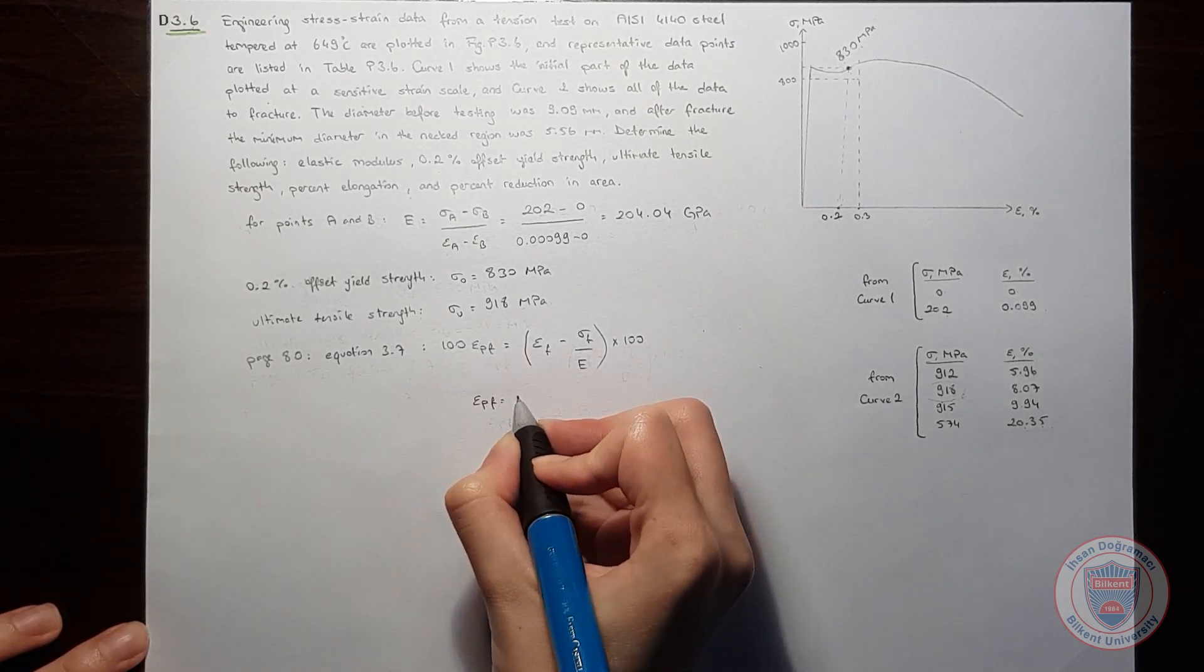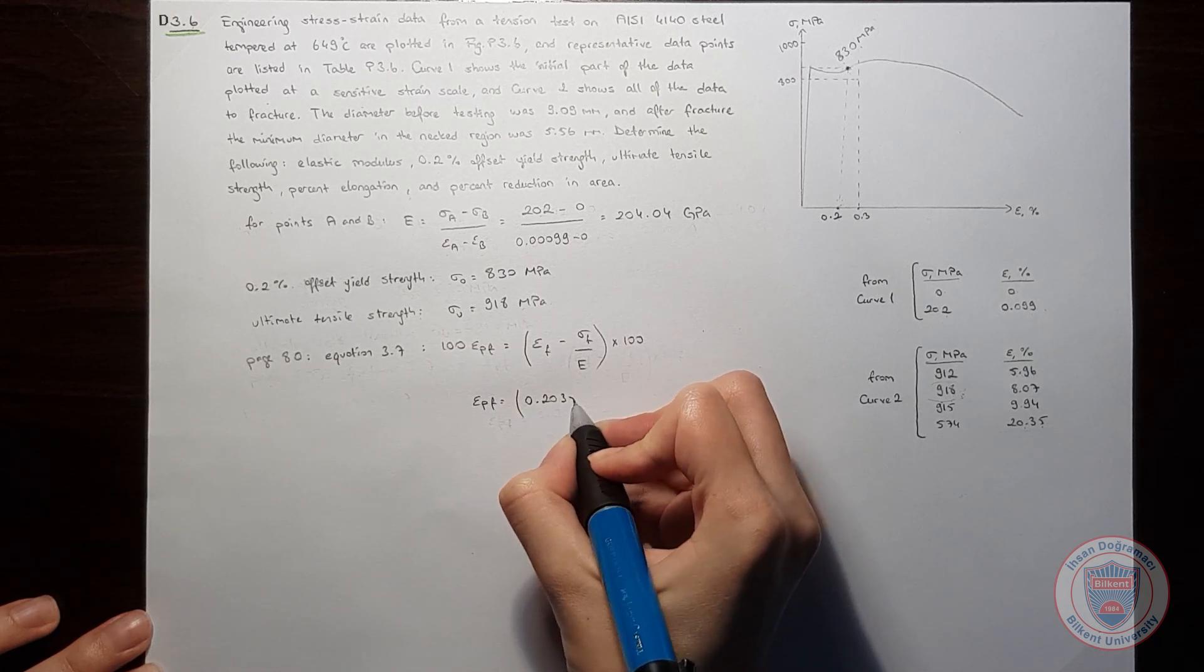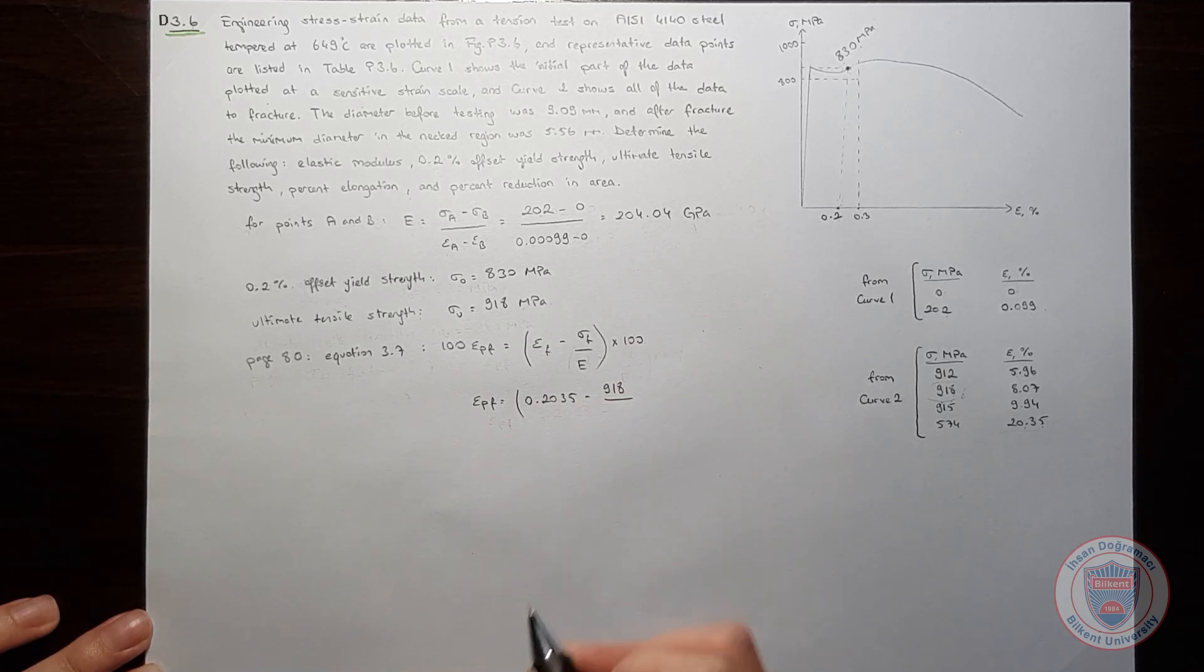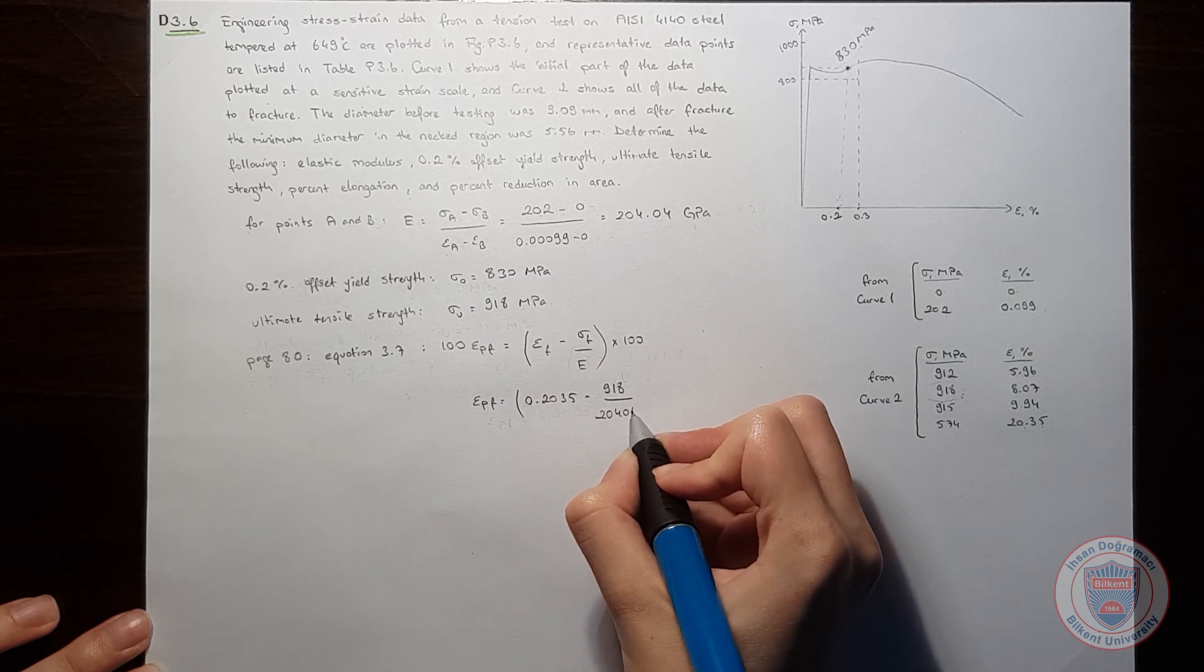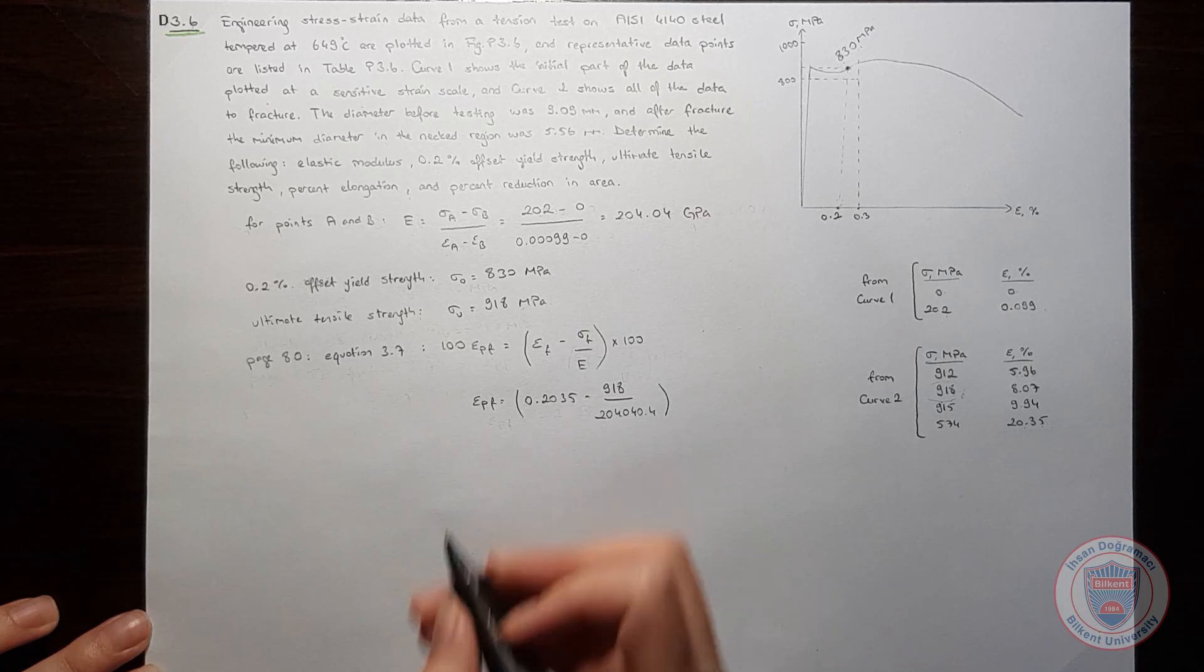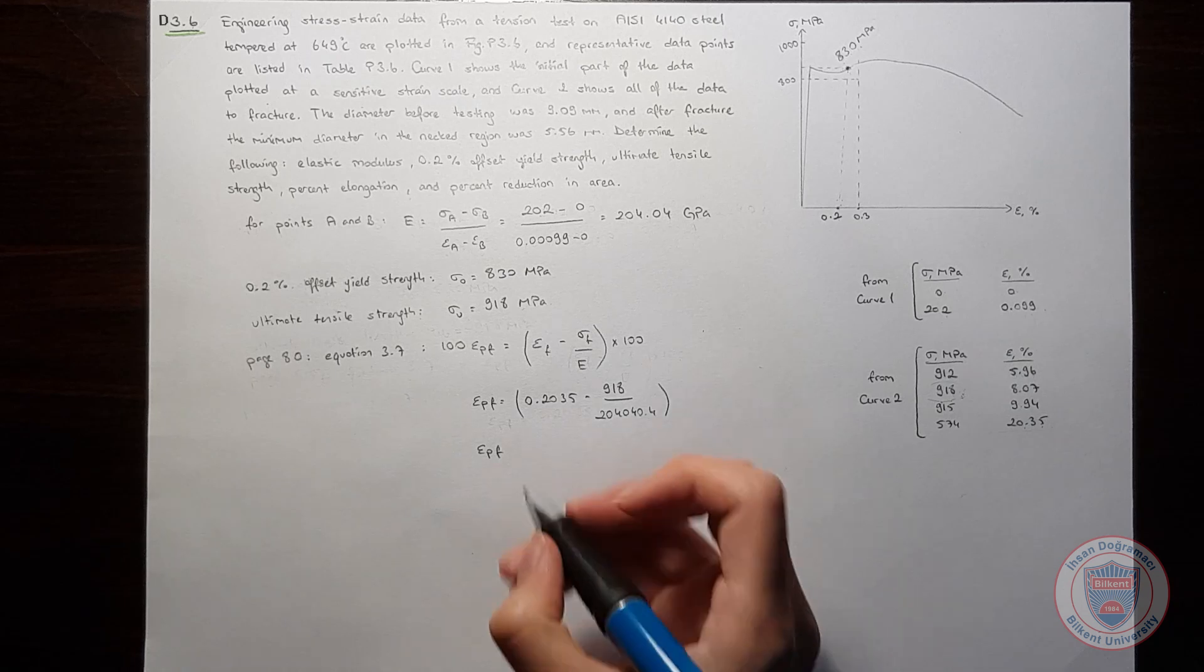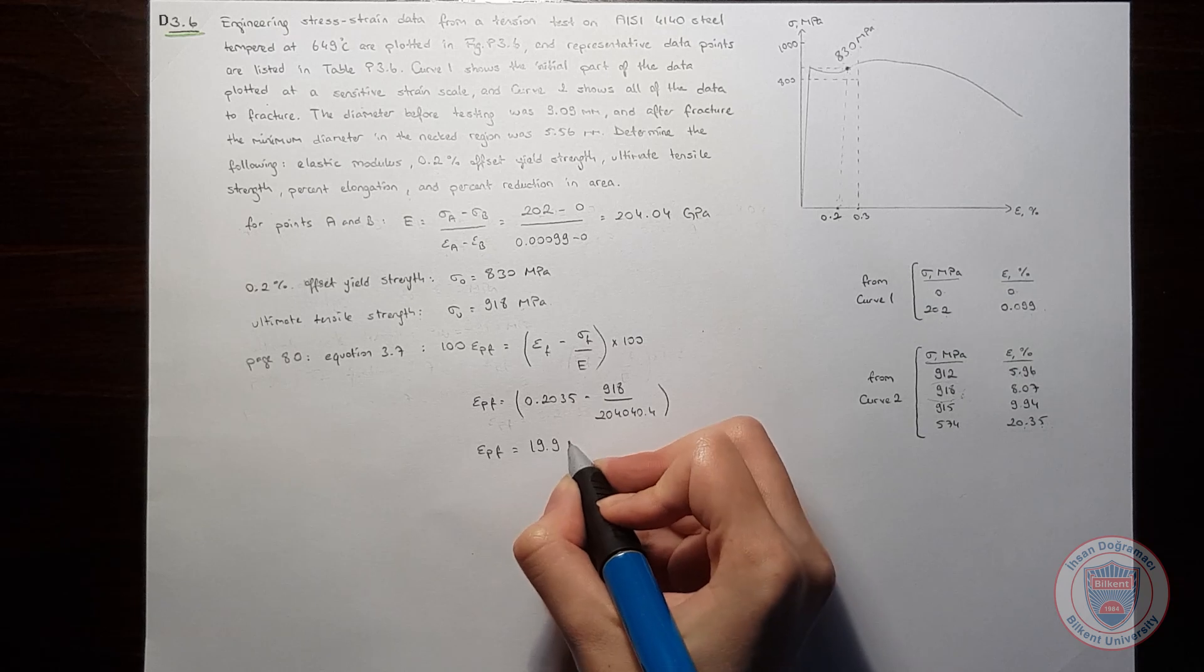Let's substitute these values. Since it's a percentage, I will divide it by 100 minus 918 over the Young's modulus. So from here we get the percent elongation after fracture as 19.9 percent.